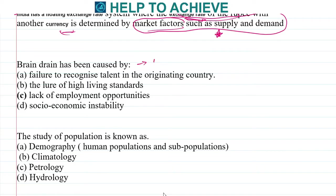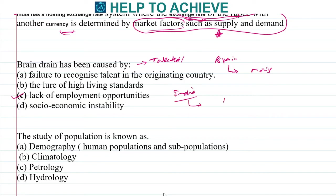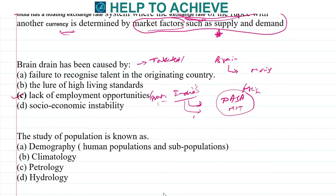Next: brain drain is caused due to what? Brain drain is a situation in which many talented people are moving out of the country — the brightest brains are moving to other countries. This happens because of the lack of employment opportunities. Many Indian scientists work in NASA, MIT, and other important institutions abroad because of the lack of proper employment or growth opportunities in India. This phenomenon is known as brain drain.